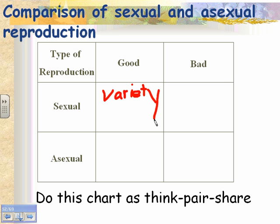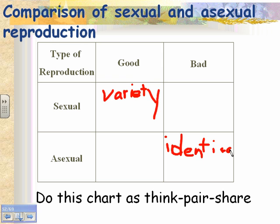For example, if their immune systems are slightly different from each other and a virus sweeps through the population, it might affect some individuals but not all, because they're all a little bit different. That's the bad thing about asexual reproduction — there's no variety. If organisms are exactly identical and a virus preys on them, it's going to have a bunch of easy targets because they're all the same.